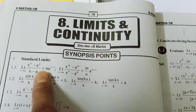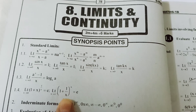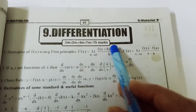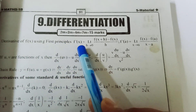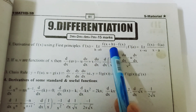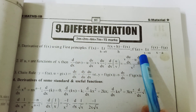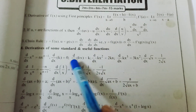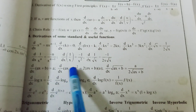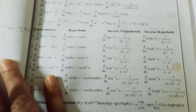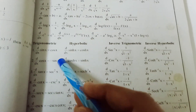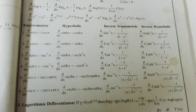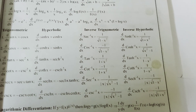Limits formulas are very important — take a screenshot. In differentiation, the first principle formula is: f dash x equals limit h tends to 0 of [f(x plus h) minus f(x)] by h. Also: f dash a equals [f(x) minus f(a)] by (x minus a). UV formula: u divided by v gives [v times du/dx minus u times dv/dx]. Trigonometric functions: sin x, cos x, tan x, cot x, sec x, cosec x. Also hyperbolic functions, inverse trigonometric and inverse hyperbolic functions.